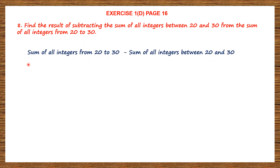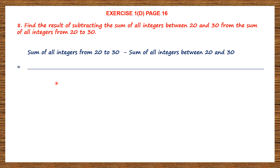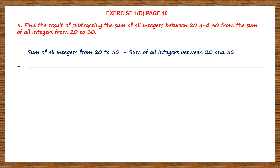So, the sum of all integers from 20 to 30 should be written first, and then we subtract the sum of all integers between 20 and 30. First, let's write down all integers from 20 to 30.